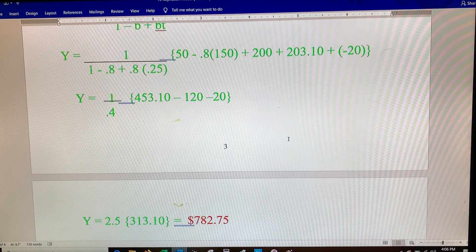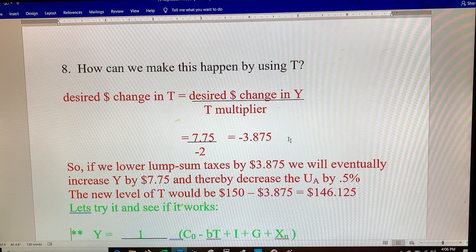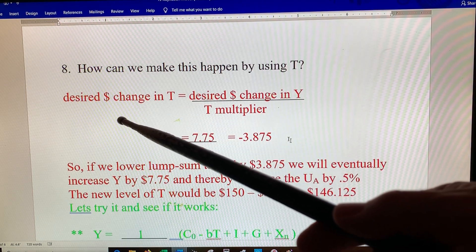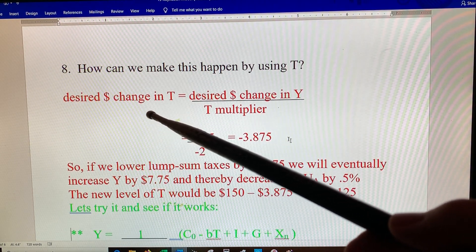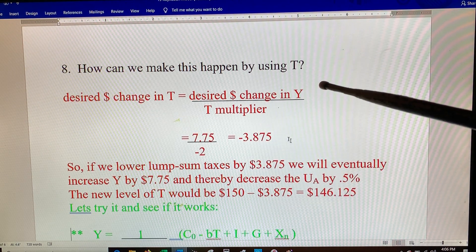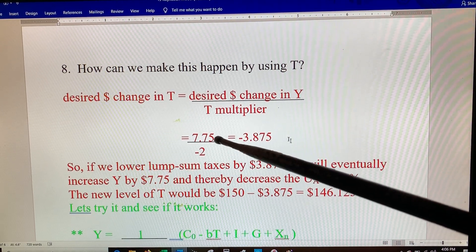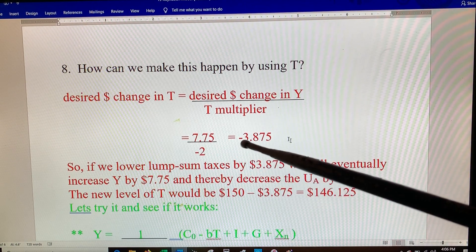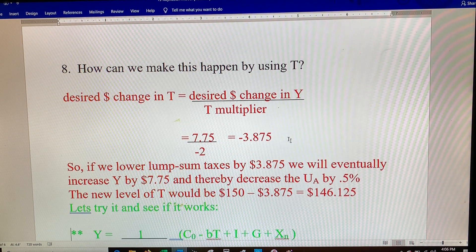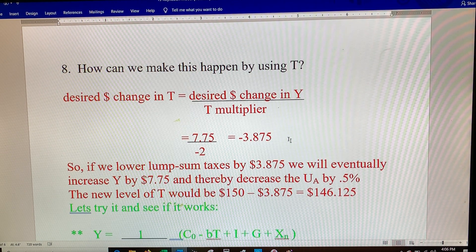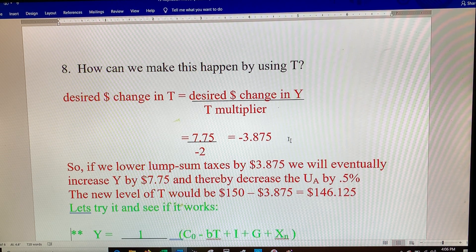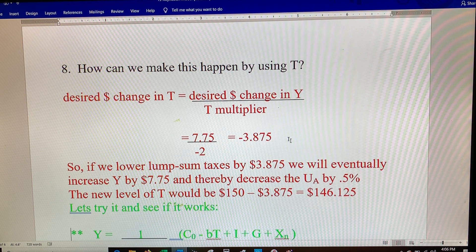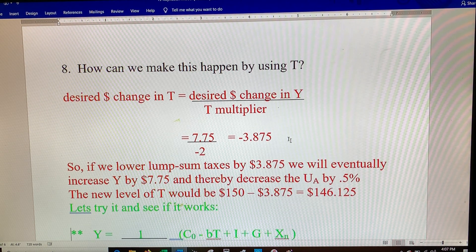Let's try a tax cut. So your desired dollar change in taxes would be your desired dollar change in Y, which was 7.75, divided by the T multiplier. T multiplier is minus 2 if you remember. So that gives you negative 3.875. So you would cut taxes by three dollars 87 and a half cents, and then over a period of about a year that would increase your GDP by 7.75 and get you right where you'd want to be.